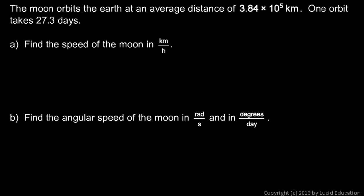Find the speed of the moon in kilometers per hour. Well, the speed is going to be distance over time, and we know the distance is one lap, and the time is 27.3 days.